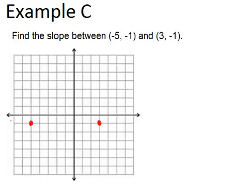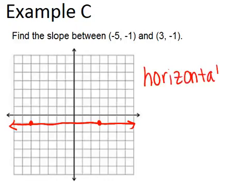Well, I noticed that both of these points have a y coordinate that's -1. That means that the line that's created is a horizontal line. Horizontal lines always have slopes that are 0.